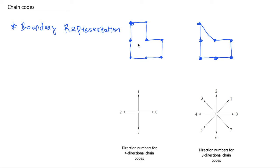There are two types of chain codes. The first one is a four-directional chain code and the second one is an eight-directional chain code. Depending on how the connectivity is defined on the boundary, we will be choosing the appropriate type. In this boundary you can define the entire boundary using a four-connectivity scheme, so a four-directional chain code will be enough. But in the second figure you can see that we have diagonal connectivity, so we will have to use an eight-directional chain code.